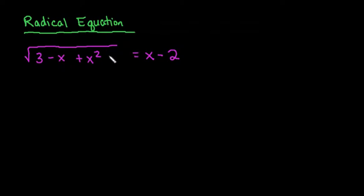So with this one, remember that our first goal is to make sure that we get the radical alone on one side. As you can see, it's already alone on the left hand side. So what we are going to do is we are going to square both sides.